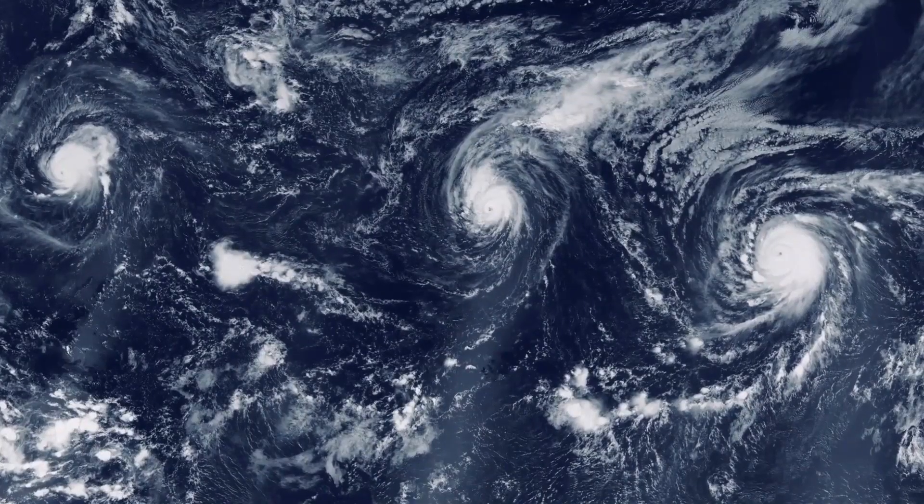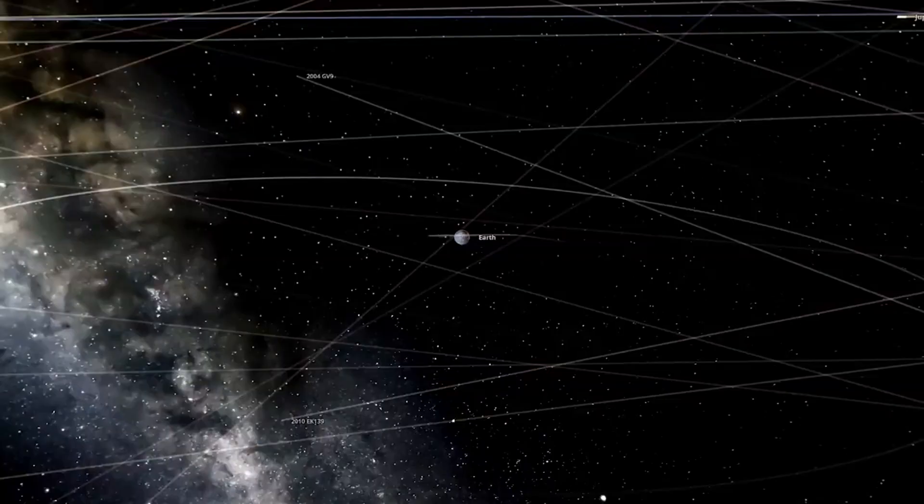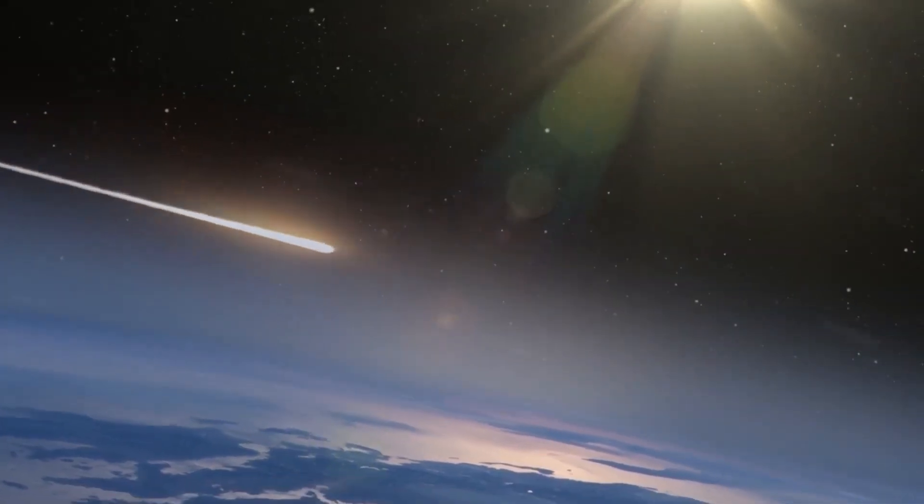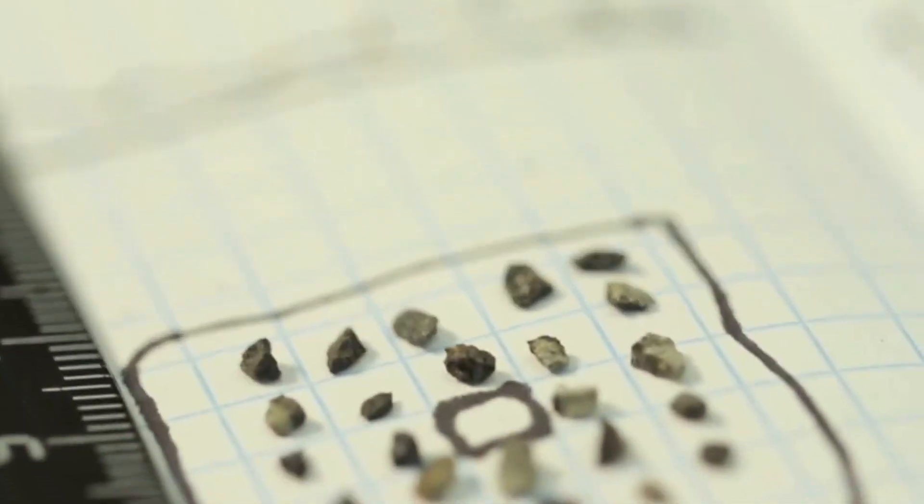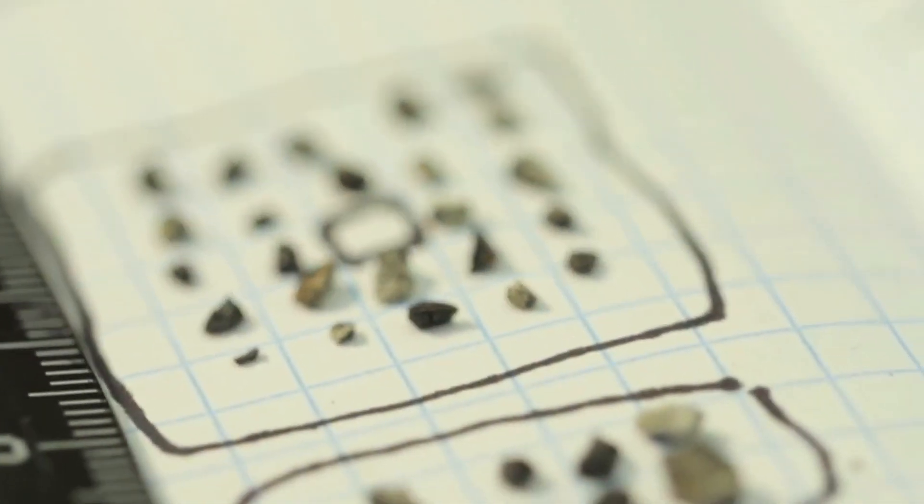Scientists couldn't predict its approach. They observe large objects with a diameter of more than 140 meters. About 30,000 of them fly past the Earth. And for such cases as Chelyabinsk, the size of 19 meters, there are too many of them to keep track.